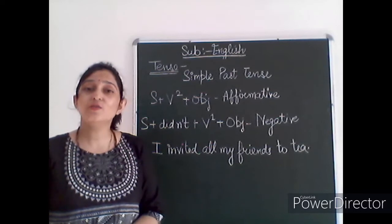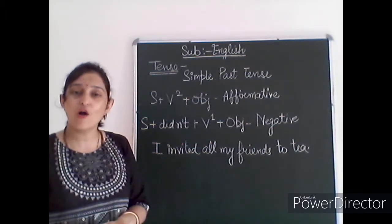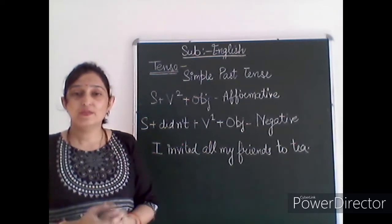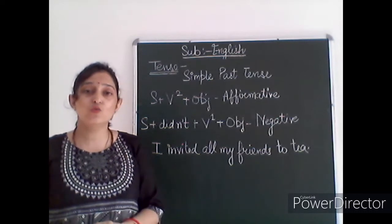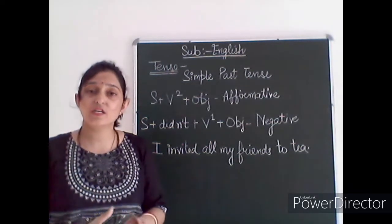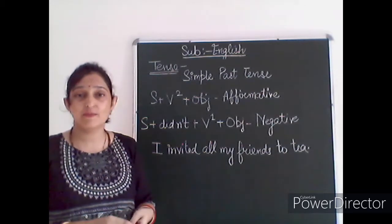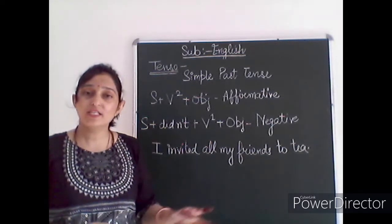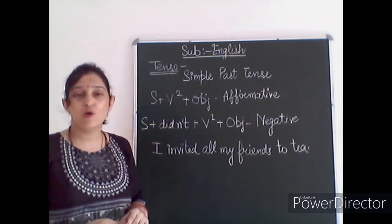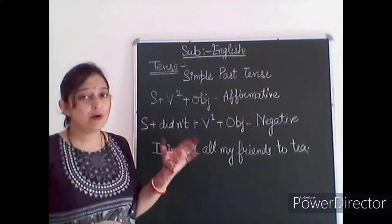Today we are going to discuss the past category of tenses. First, we will discuss all the rules of the simple past form. This category expresses an action that took place in the past, and that action is over now and does not have any connection with the present. The past is also divided into four main types: simple, continuous, perfect, and perfect continuous.